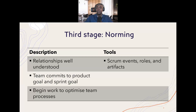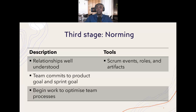The tools the scrum master or scrum team can use in the norming phase are the scrum events. There are five scrum events: sprint planning, the sprint itself, the daily stand-up, the sprint review, and the sprint retrospective. There are also three scrum accountabilities — the product owner, the scrum master, and the developers — and three artifacts: the product backlog, the sprint backlog, and the increment.